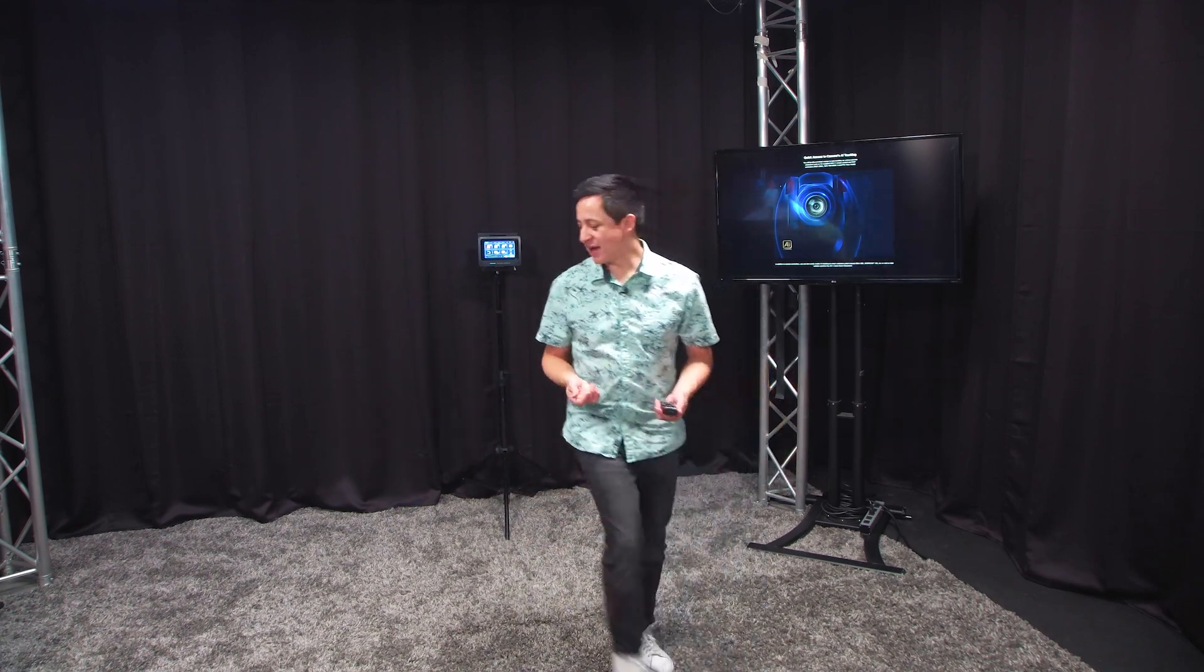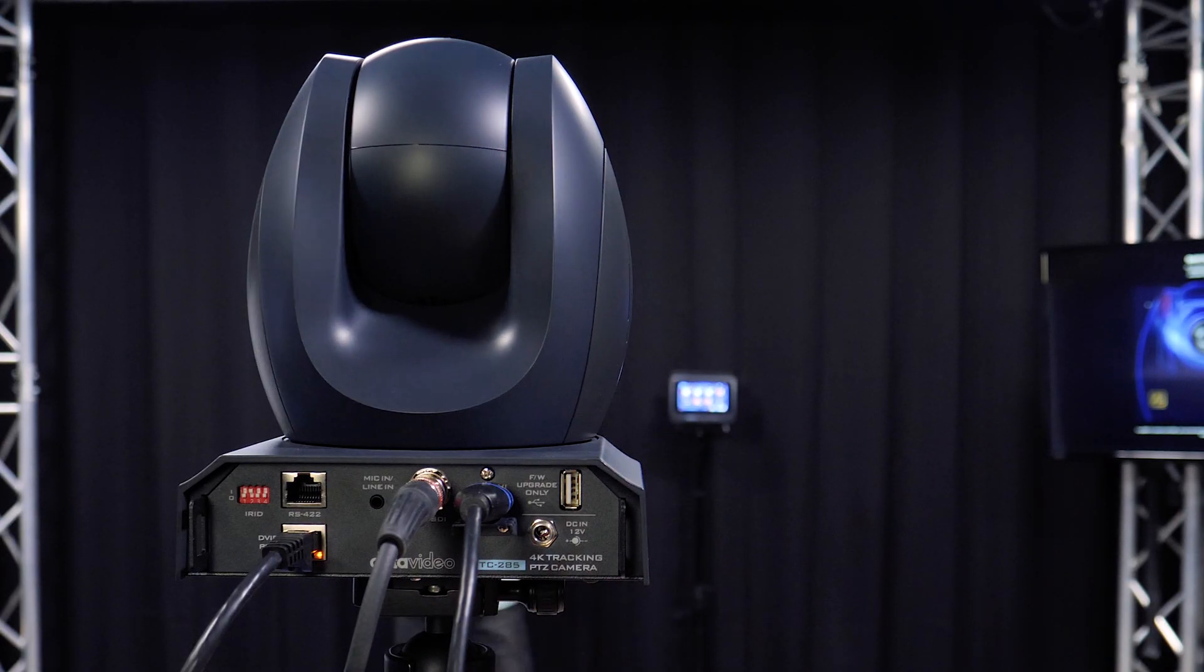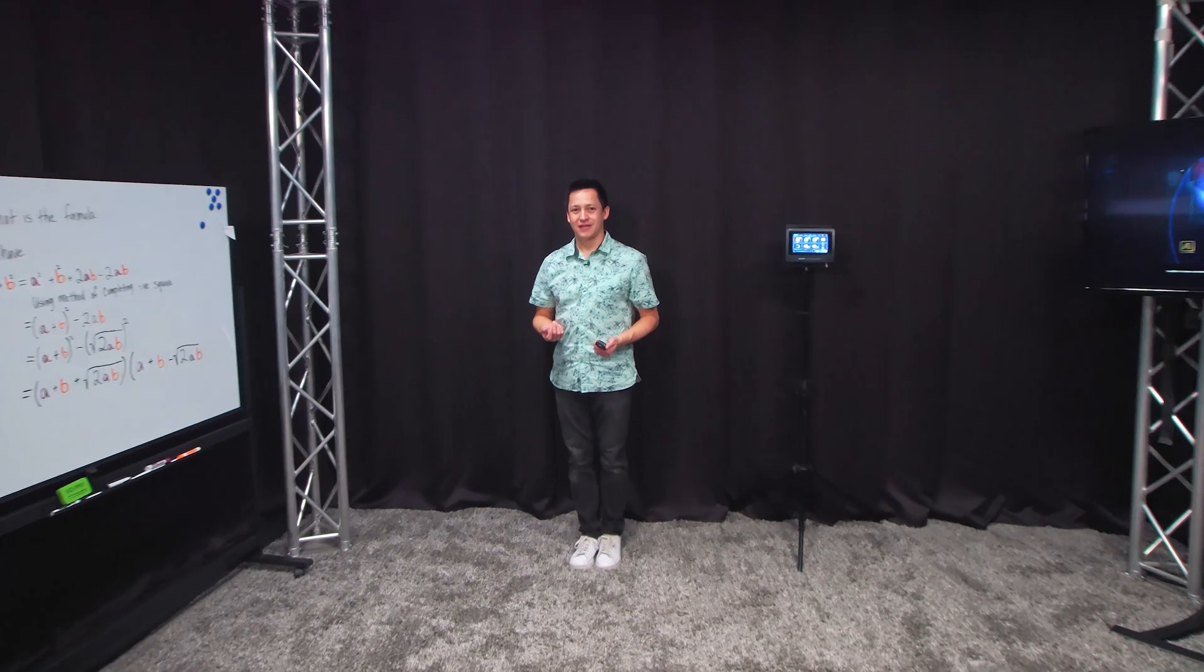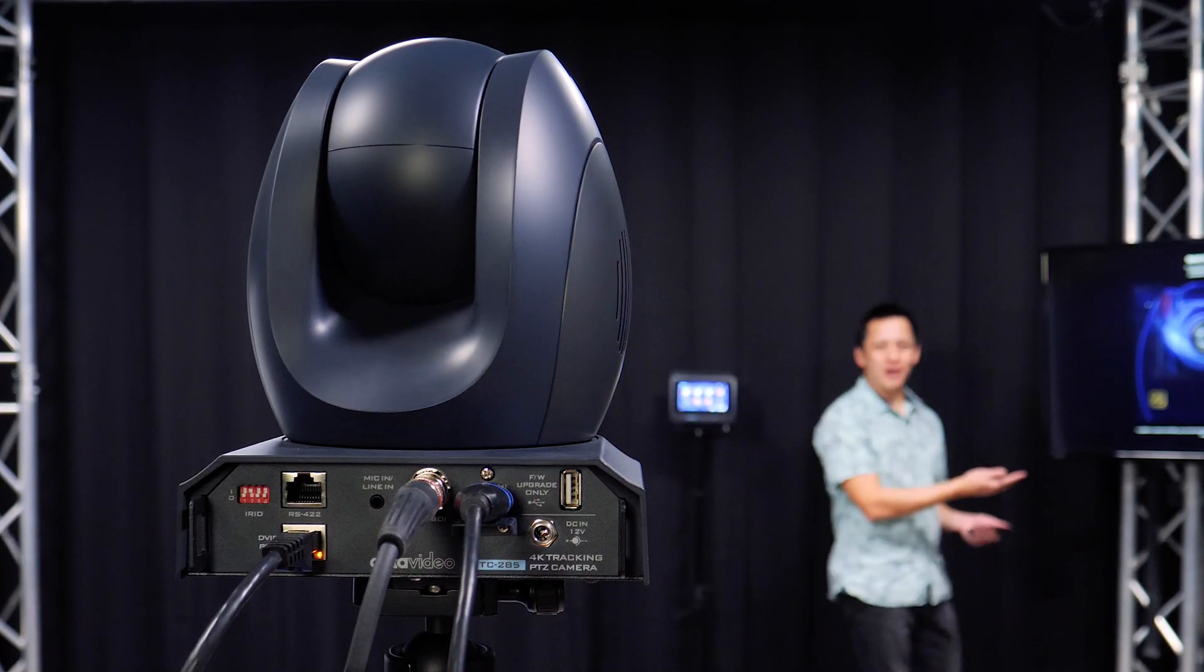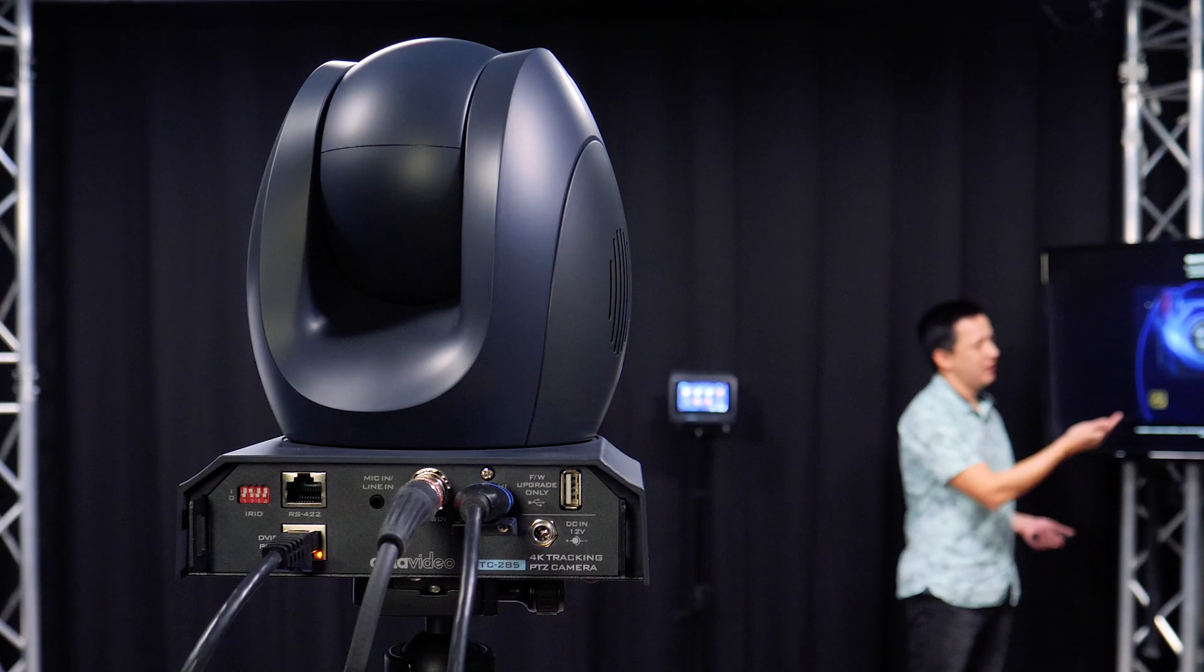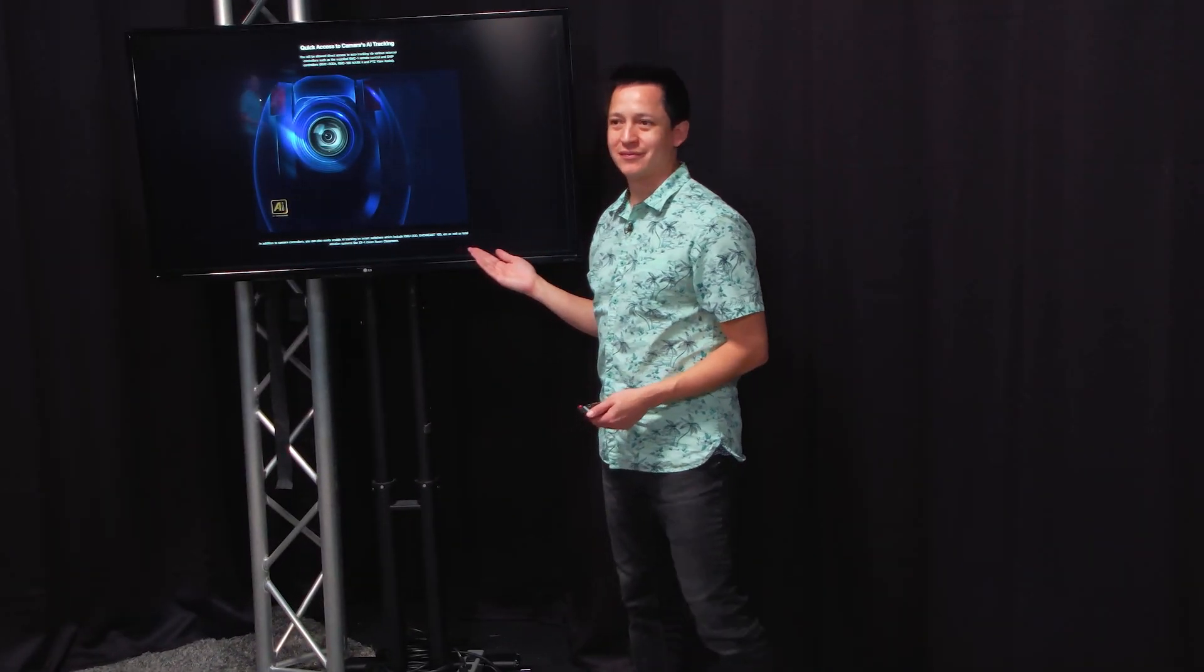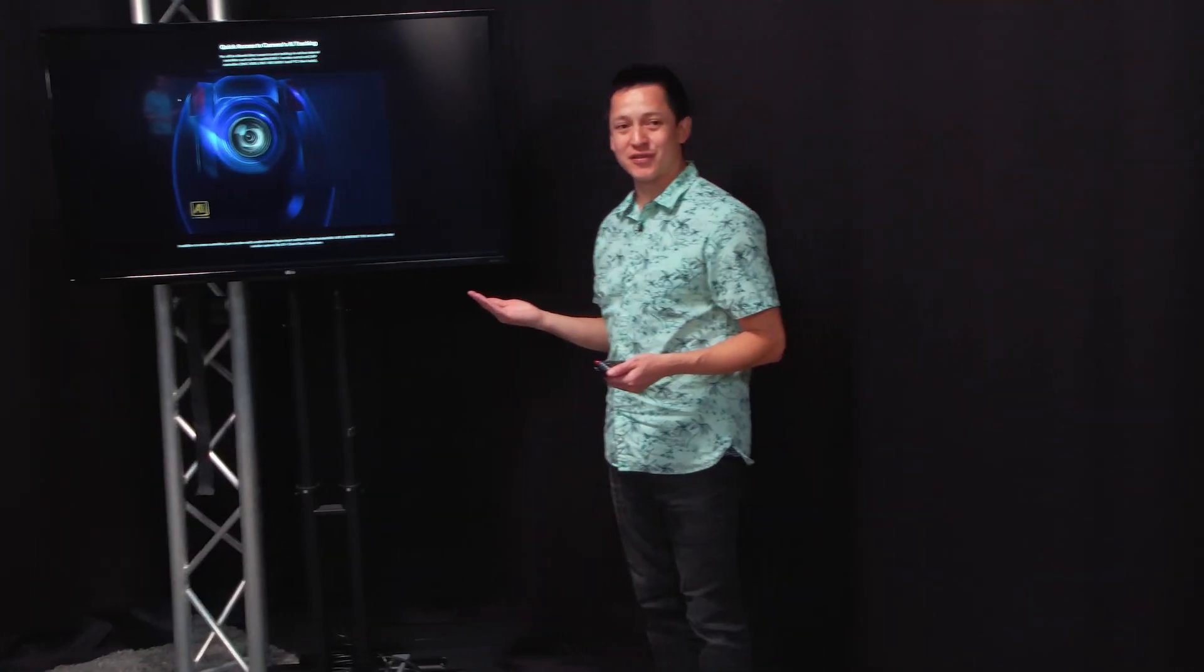So if I go to the back, the camera is going to follow me and since I've stopped it's now zooming in to focus on me. I come over, I have a quick little PowerPoint presentation. Here's a slide talking about the AI tracking on the Data Video PTC 285. As you see the camera continues to follow me.